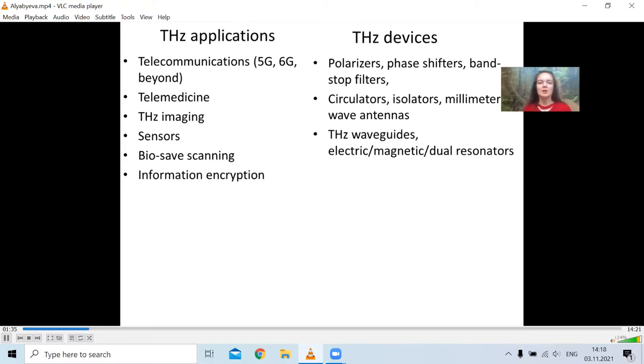In case we speak about optoelectronics, of course you will have some polarizers, you will have filters of particular frequencies, bandstop filters, phase shifters. If you speak about telecommunications, you will have circulators, isolators. If you need to emit or detect radiation, you need antennas, waveguides, and resonators.